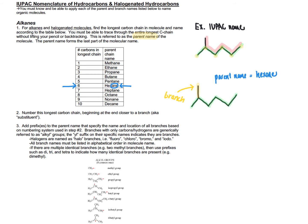The branch comes off the parent chain, hence we call it a branch or substituent. In step two, we number the longest carbon chain starting from the end closest to the branch highlighted in yellow. We start numbering at the left end because it's closer to that yellow branch: one, two, three, four, five, six — confirming six carbons and that hexane is the parent name.